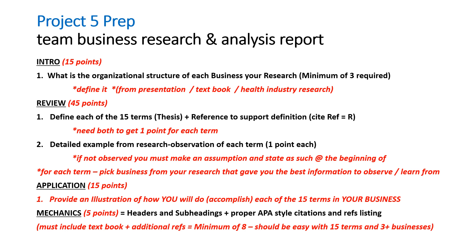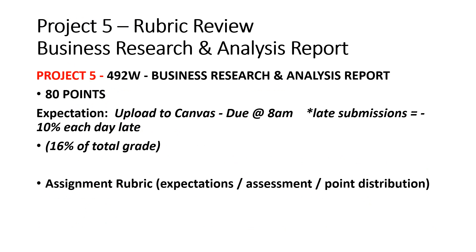The last part is the application section — 15 points. After reviewing and researching each of the 15 terms, provide a concrete illustration of how you will accomplish each one in your own business design. Then there's mechanics — headers and subheadings — worth five points. You must include the textbook, and you need a minimum of eight different references. With the terms and the three businesses, that should be easy. The rubric is 80 total points; upload to Canvas by 8 a.m.